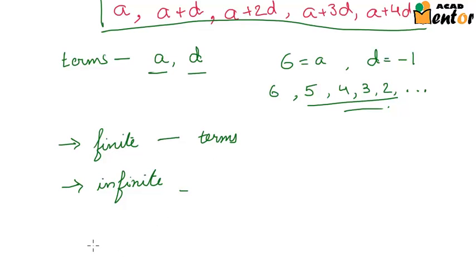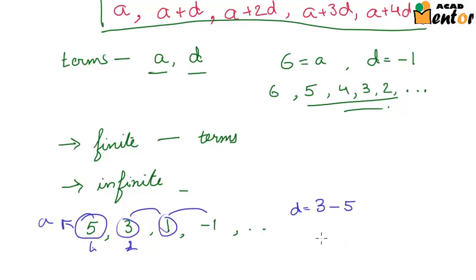Also, if an AP is given to us, say for example, we had the AP 5, 3, 1, minus 1 and so on, then we can easily find out what the first term and the common difference is. The first term is clearly 5 here. This is the first term, and the common difference can be found out by subtracting the first term from the second. That is 3 minus 5. It is always good to verify that the common difference is common throughout or is constant throughout. So we can check by subtracting the second term from the third term as well. So you can see that d should also be equal to 1 minus 3, that is minus 2, and this was also minus 2. Hence, the common difference d is minus 2 and the first term a is 5.